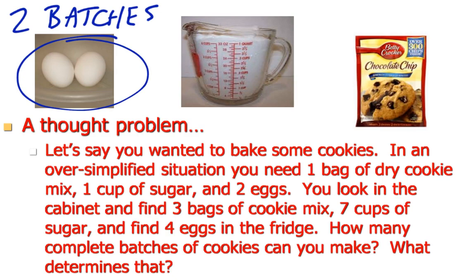So if we were to base the amount of cookies we could make solely on our cookie mix, we could make three batches, since we need one bag of cookies to make the cookies overall, and we have three bags total. If we were to rely on the sugar, we need one cup of sugar to make one batch of cookies. Well, we found seven cups. So according to our sugar alone, we should be able to make seven batches of cookies.